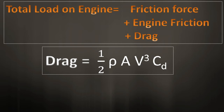When a vehicle moves, the air opposes its movement — air flows over the outer surface of the vehicle and toward the rear end. Drag is given by the formula: Drag = ½ · ρ · A · v² · Cd, where ρ is air density, A is the cross-sectional area of the vehicle, v is the speed of the vehicle, and most importantly, Cd is the coefficient of drag.